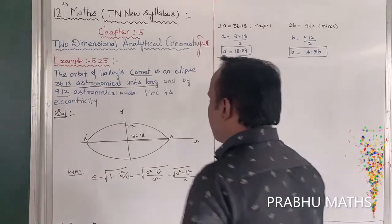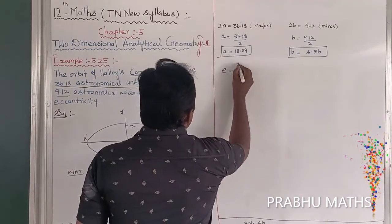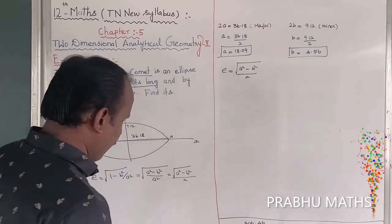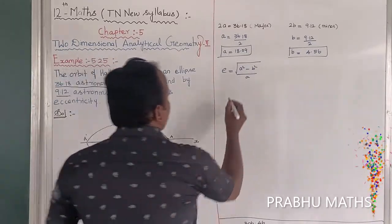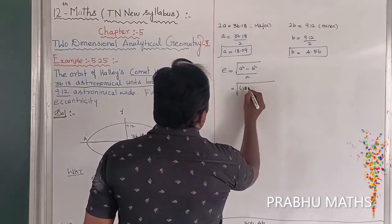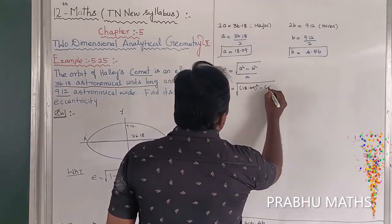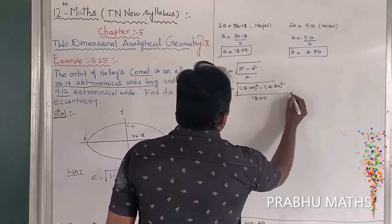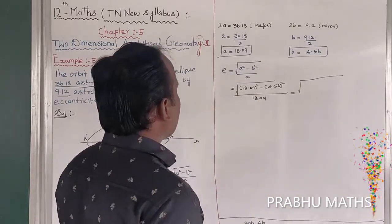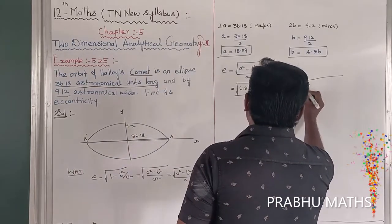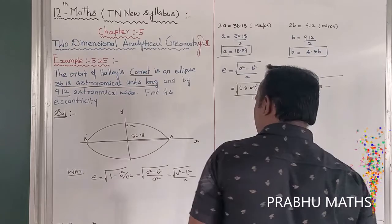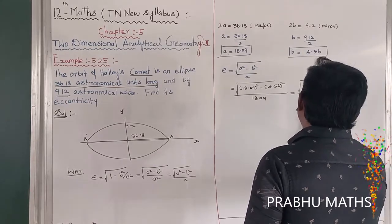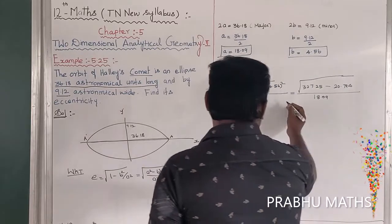Now apply the values. Eccentricity = √(a² - b²) / a = √(18.09² - 4.56²) / 18.09. So 18.09² = 327.25 and 4.56² = 20.794. That gives √(327.25 - 20.794) / 18.09 = √306.246 / 18.09 = √0.936.